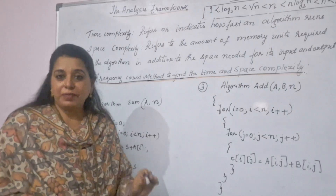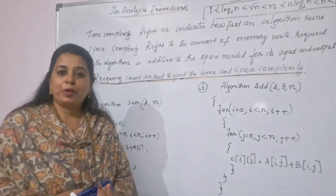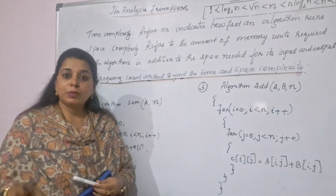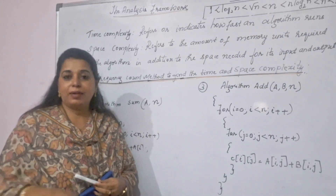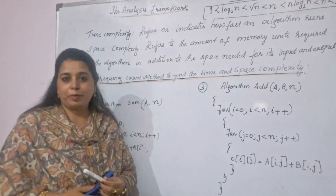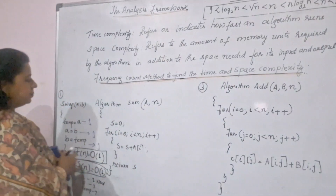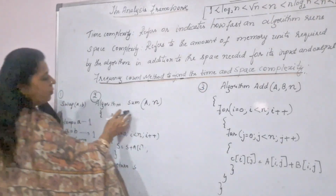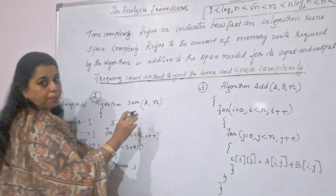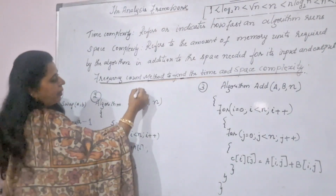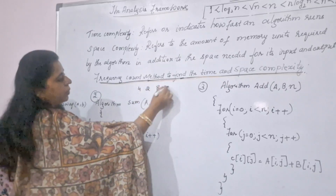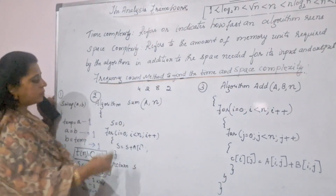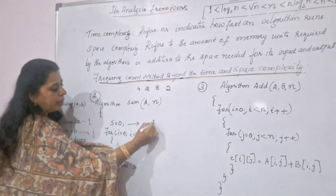We mainly worry about time complexity of an algorithm. We assume our systems now have sufficient space to store any number of steps. The problem arises only when we have very huge data — otherwise we don't have to worry much about space. The second example is simply calculating the sum of numbers in an array. If you give four numbers, it will add all those numbers and return the total value.